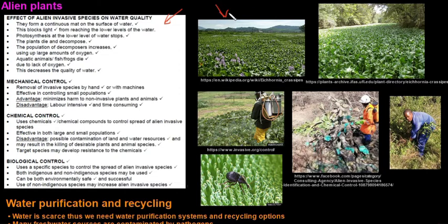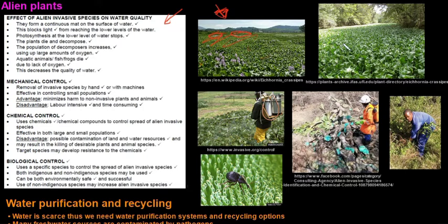An example of this kind of alien plant is the hyacinth. Those who have visited Hartbeespoort Dam will see there is a major problem with hyacinths in that area — they cover the water completely. This is also an area of water covered completely by these kinds of plants. They block sunlight from reaching the lower levels of the water.